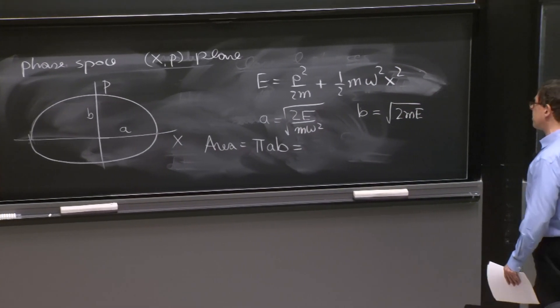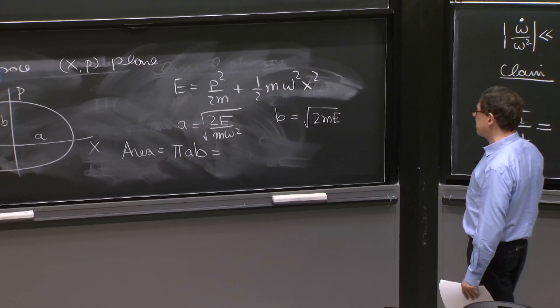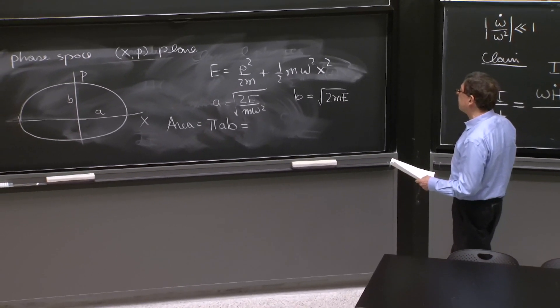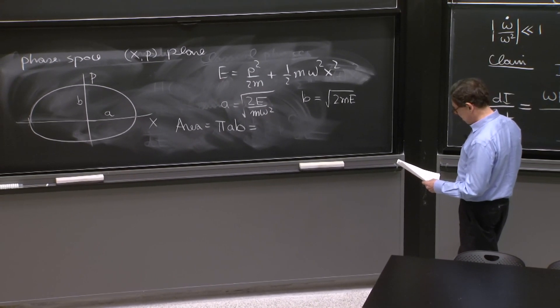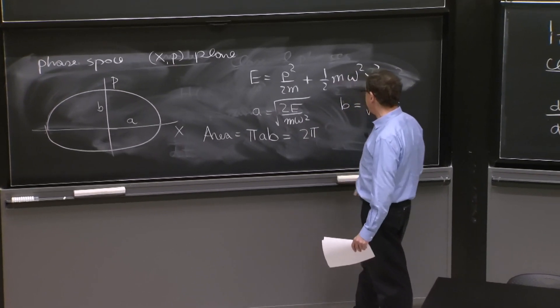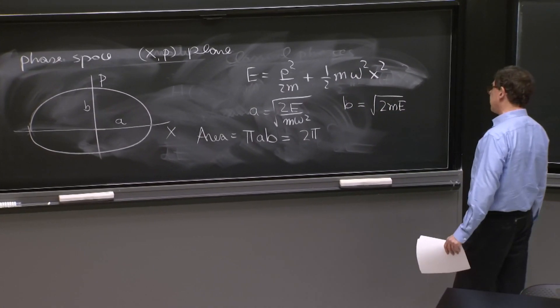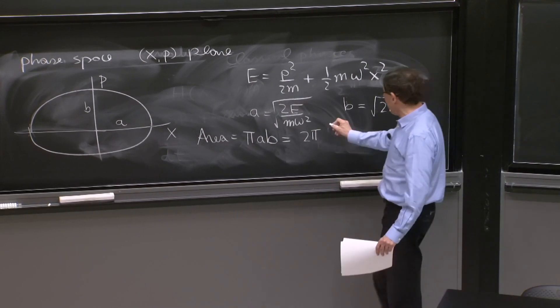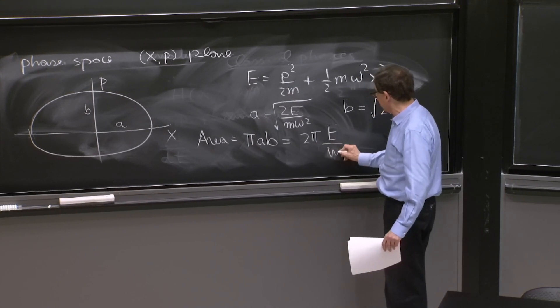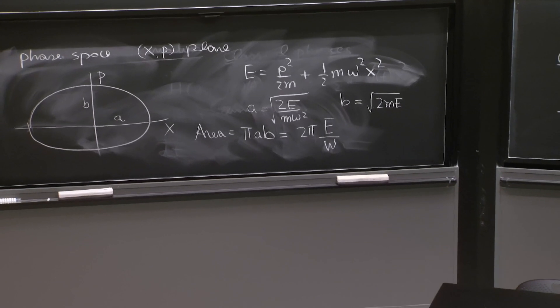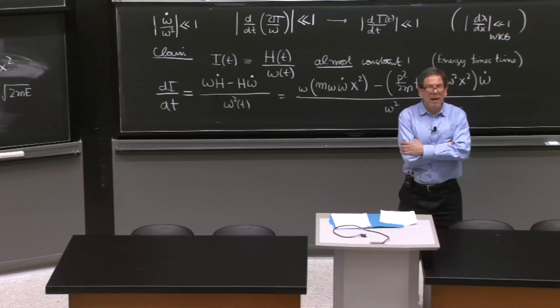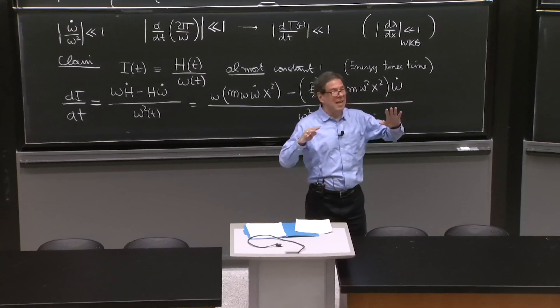And then when we multiply it, look what happens. Pi AB, I get 2 pi, the m's cancel, the e's cancel, E over omega. Hey, that's our adiabatic invariant. 2 pi E over omega. The area of this thing is our adiabatic invariant. That's a very nice classical picture.